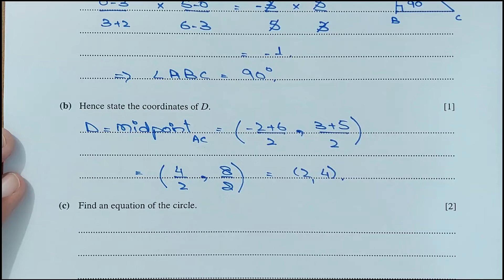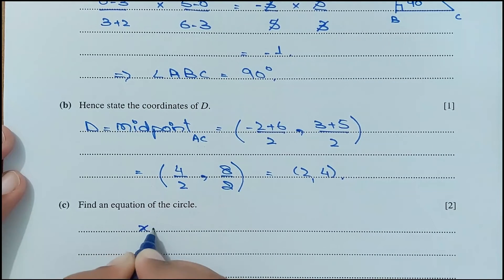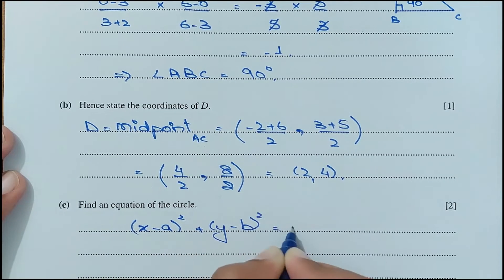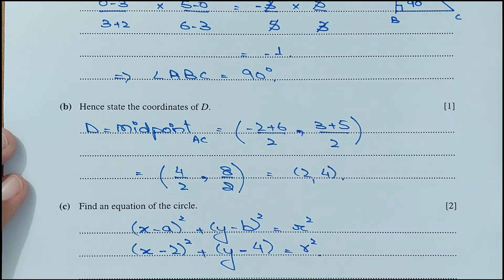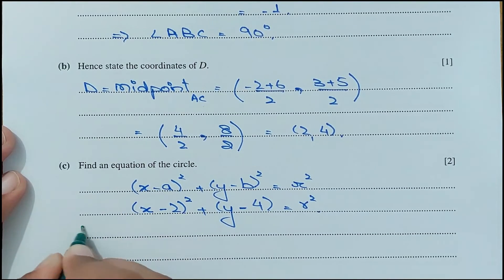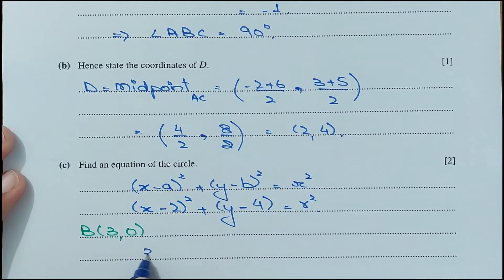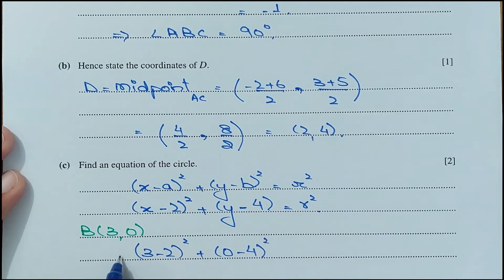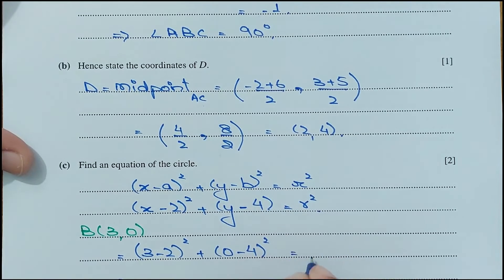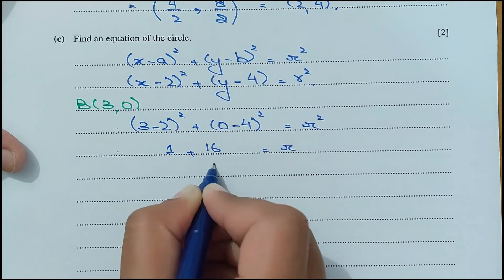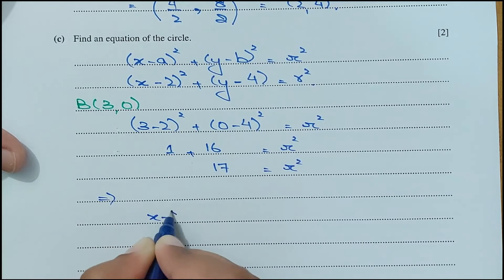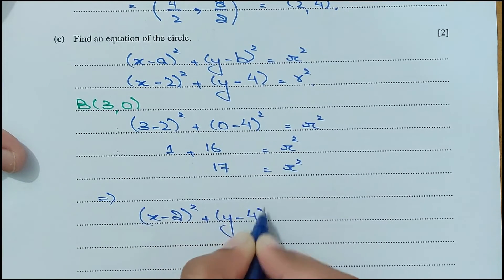For part c, find the equation of the circle. The standard form is (x − a)² + (y − b)² equals r². With centre D(2, 4), substituting point B(3, 0): (3−2)² + (0−4)² equals r², giving 1 + 16 equals 17. So r² equals 17. The equation of the circle is (x − 2)² + (y − 4)² equals 17.